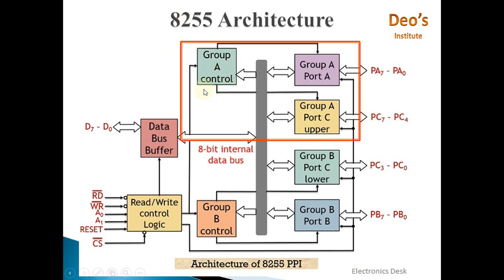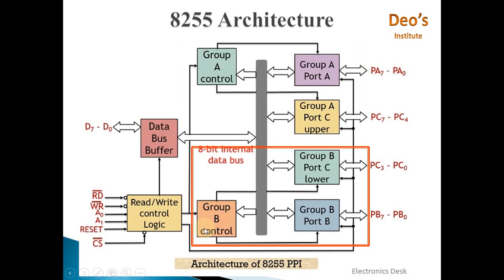Group A control manages Port A and Port C upper. Group A control has inputs from the read/write control logic as well as from the internal data bus. Similarly, Group B control has inputs from the read/write control logic and the internal data bus, and it controls Port C lower and Port B.